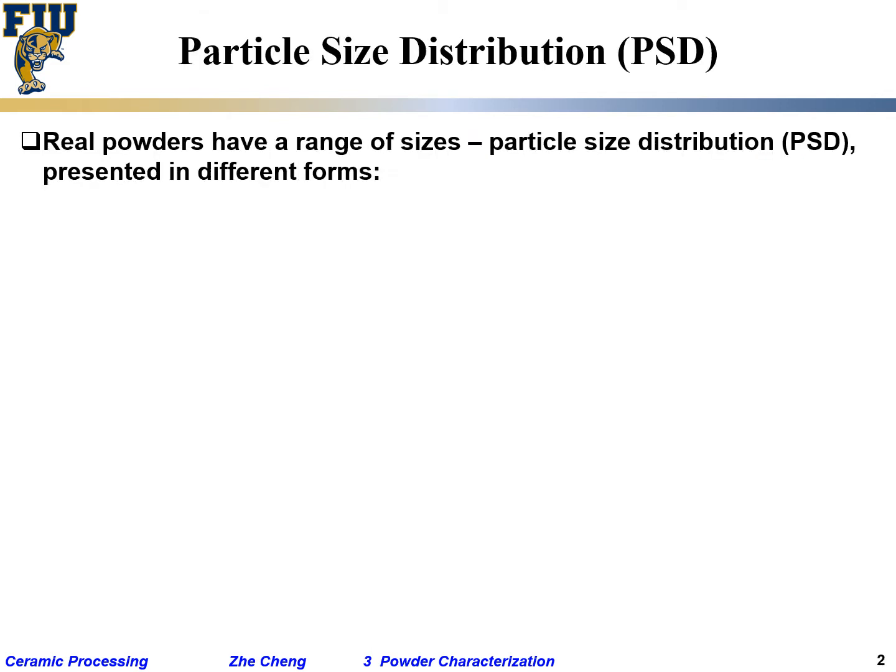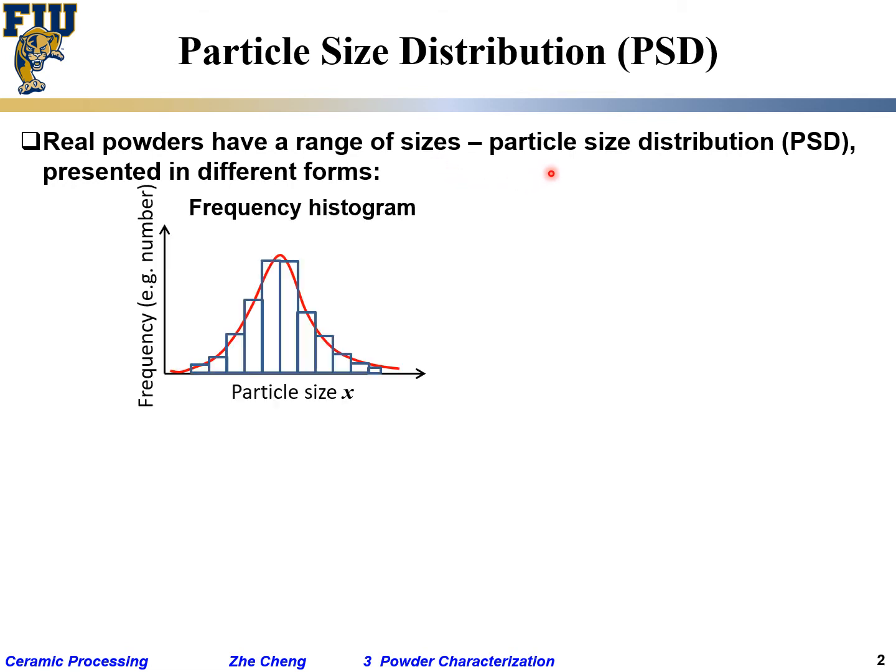Particle size distribution: Real powders have a range of sizes. We rarely have uniform, exactly the same size; they always have a size distribution—particle size distribution or PSD—presented in different forms. Sometimes we use a frequency diagram where you count how many particles fall between certain size ranges. You get a histogram, a so-called frequency histogram.